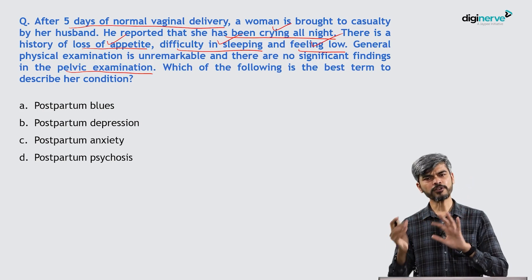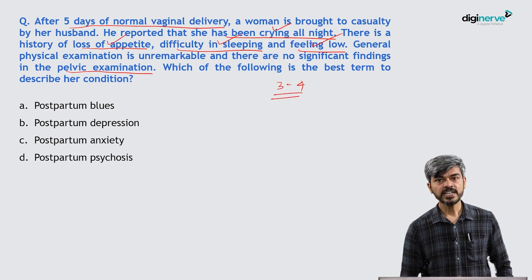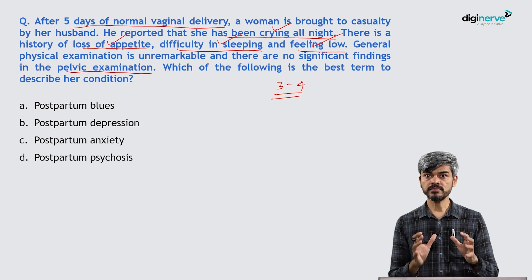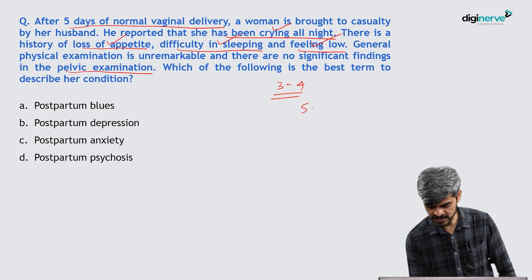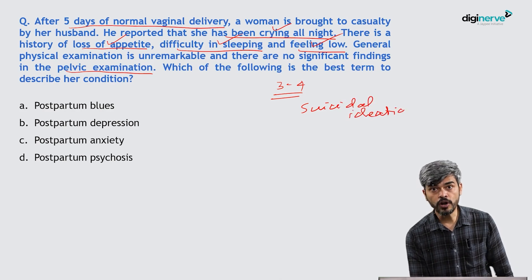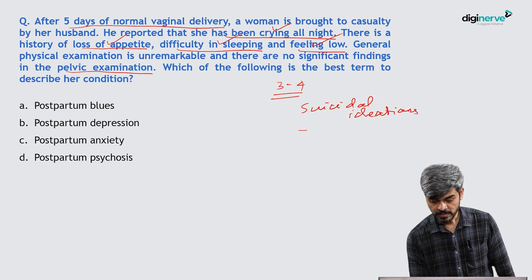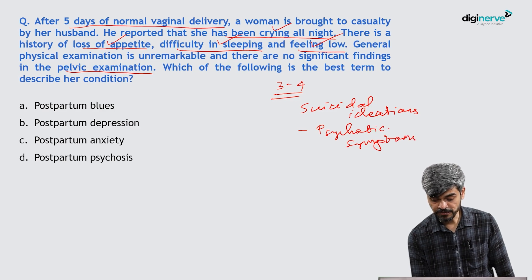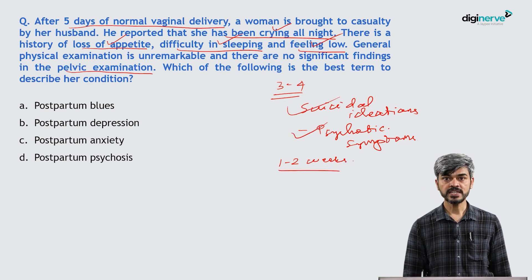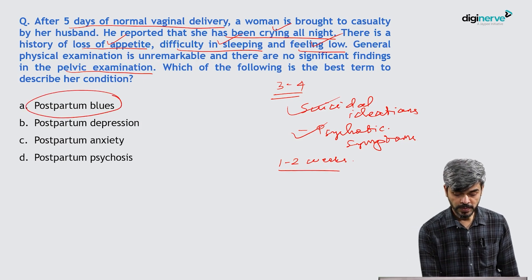If there are 3 or 4 depressive symptoms in a woman in the first 1 or 2 weeks after delivery, and this woman does not have suicidal ideation or psychotic symptoms, then the diagnosis would be postpartum blues. Postpartum blues can happen in up to 40% of women after delivery — it is a very frequent set of symptoms seen in women who have delivered.